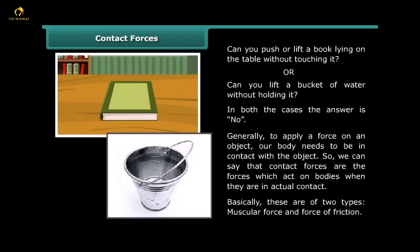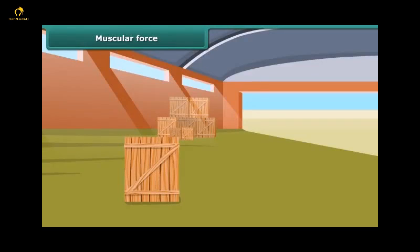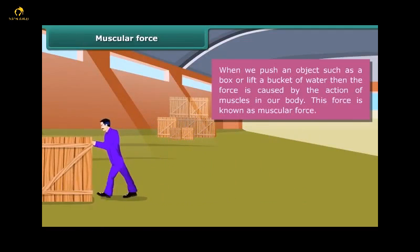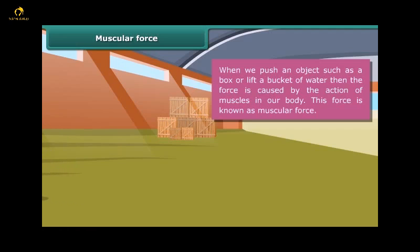Basically these are of two types: muscular force and force of friction. Muscular force: When we push an object such as a box or lift a bucket of water, then the force is caused by the action of muscles in our body. This force is known as muscular force.